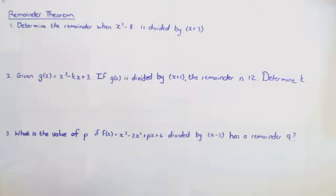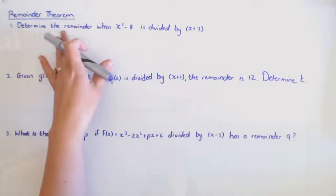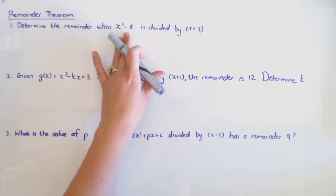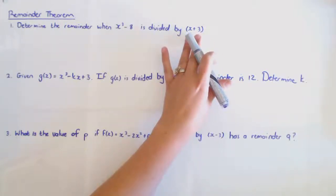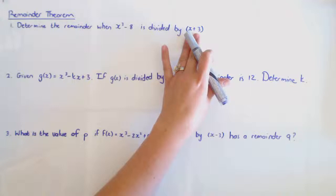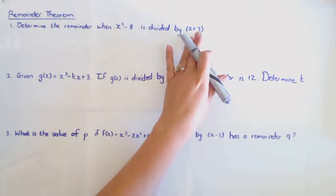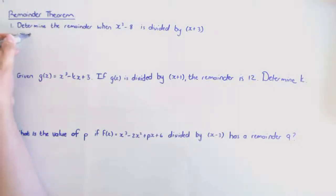The Remainder Theorem says that when f(x) is divided by a linear expression, the remainder is f(b/a), where b/a is found by making the bracket zero and solving for x. That x value is substituted into your function to give you the remainder.